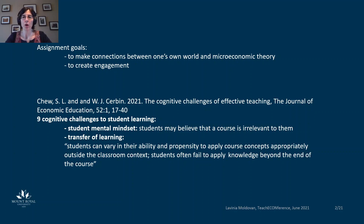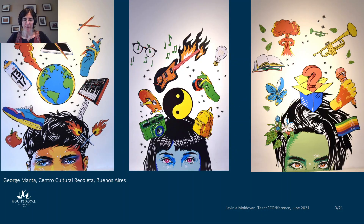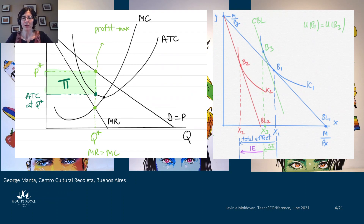Students often fail to apply knowledge beyond the end of the course. While we have no control over what students do beyond the end of our course, we can teach them how to apply economic theory in contexts they are familiar with and encourage them to keep practicing once the course is over. We all use instructor-created examples to provide context for economic theory, but it is difficult to find something that all students can relate to. The assignment I introduced in my principles of microeconomics course relies on student-created examples so that the diagrams we use in our classes find their place in students' long-term memory instead of overwhelming them.